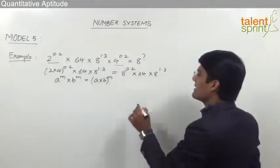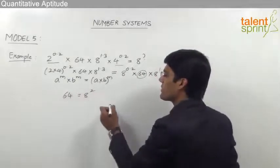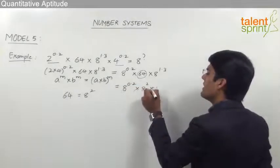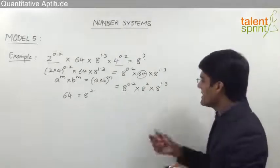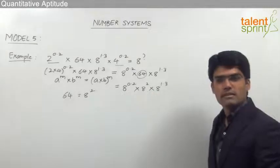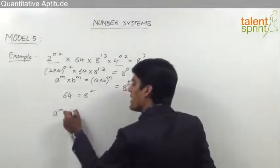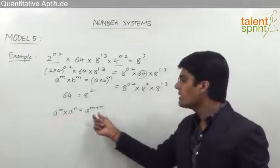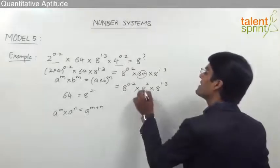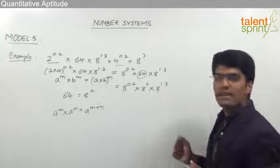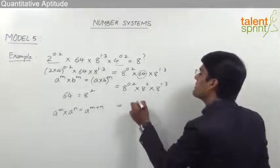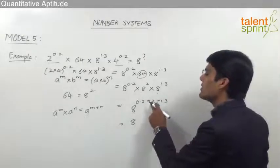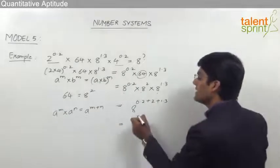Next, 64 is nothing but 8 squared, so it can be replaced with 8 squared. This becomes 8 power 0.2 into 8 squared into 8 power 1.3. Now all the bases are equal to 8 and in multiplication form, so the powers can be added. The answer will be 8 power 0.2 plus 2 plus 1.3, which equals 8 power 3.5. So the value that comes in place of the question mark is 3.5.